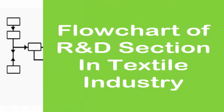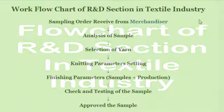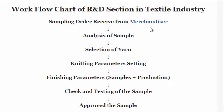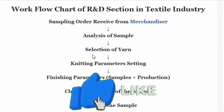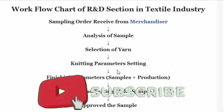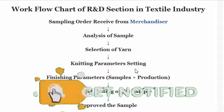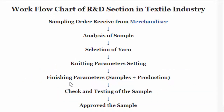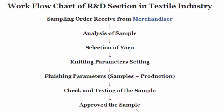The closure of the R&D section in the textile industry includes: sampling order received from the merchandiser, analysis of the sample, selection of yarn, making parameter settings, finishing parameters for sample and production, checking and testing of the sample, and approving the sample.